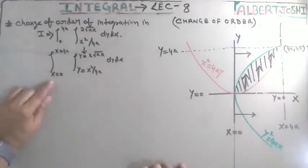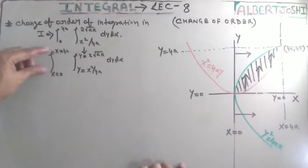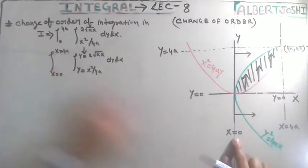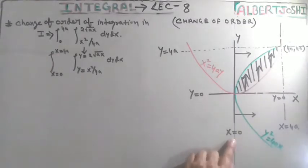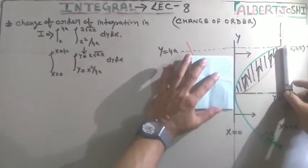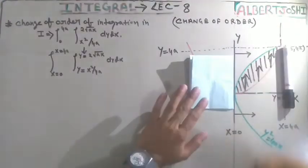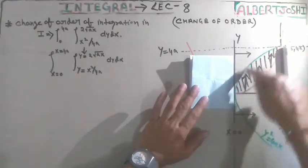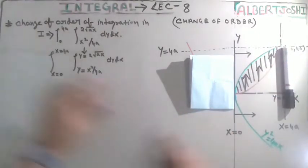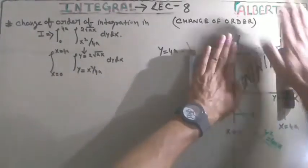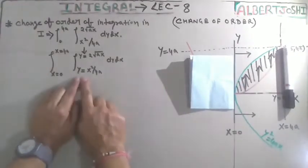He has written x equal to 0 to 4a. Integration means you have to count the total number of points from this to this. x equal to 0 is here, and x equal to 4a is here. It means we have to count the total number of points from here to here. In this condition, everything will become okay, but we have to count total number of points inside this shaded part.